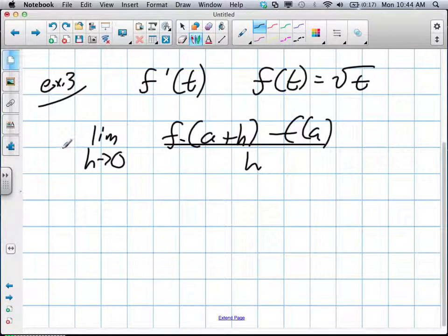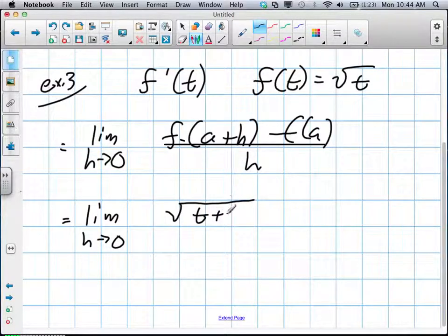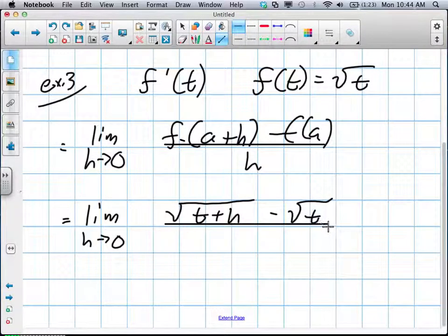We're now going to plug in the limit as h approaches 0. The function is a root, so we're looking for √(t+h), where t is our a value, minus √t, all divided by h.